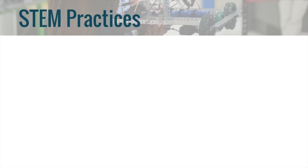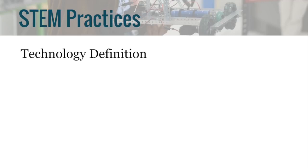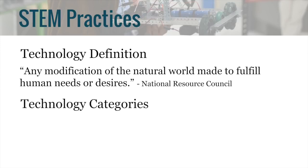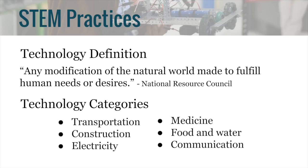The book also provides four technology practices. Before I list these practices, I want to talk about the definition of technology. The term is usually used for anything that needs to be plugged in, especially a device that is computerized. However, the National Resource Council states that technology is any modification of the natural world made to fulfill human needs or desires. So a hammer or a pencil would be examples of technology. The book categorizes technologies into six groups: transportation, construction, electricity, medicine, food and water, and communication.